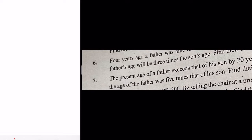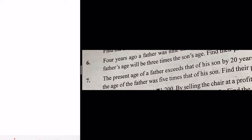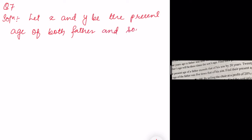We are doing exercise 4.3 question number 7. The present age of a father exceeds that of his son by 20 years. 20 years ago the age of the father was five times that of his son. Find their present ages. Let x and y be the present age of the father and son respectively.